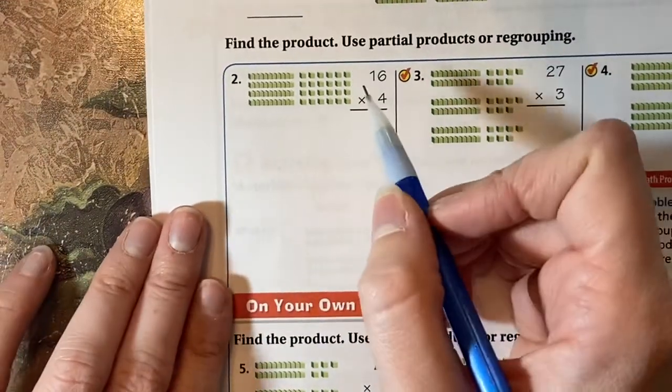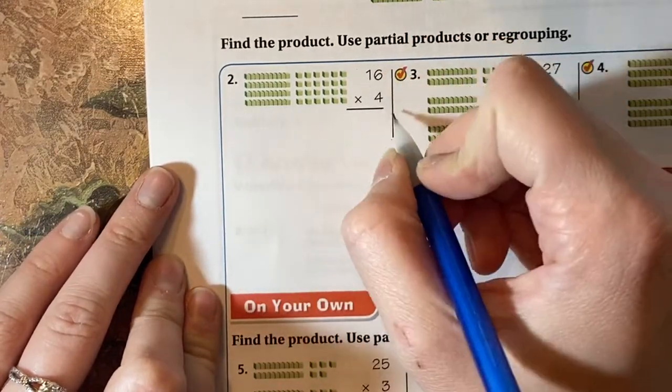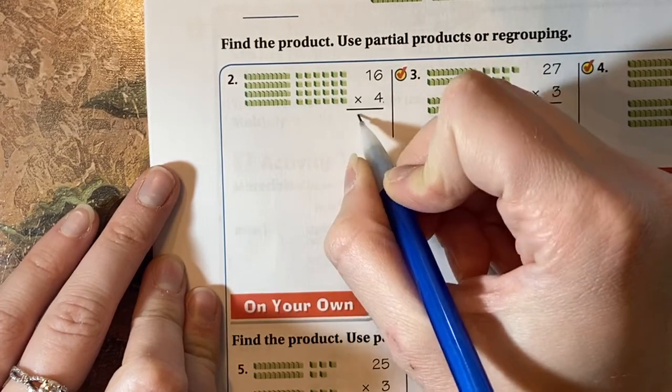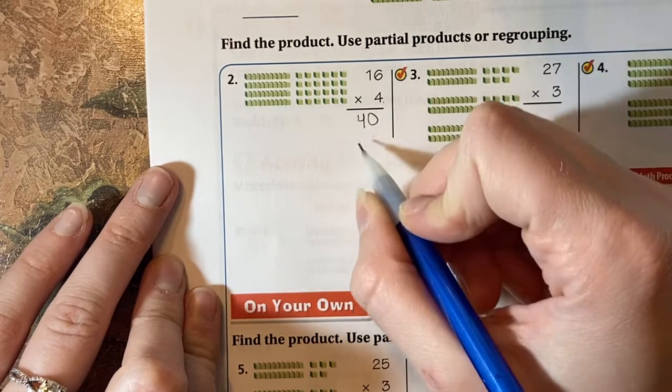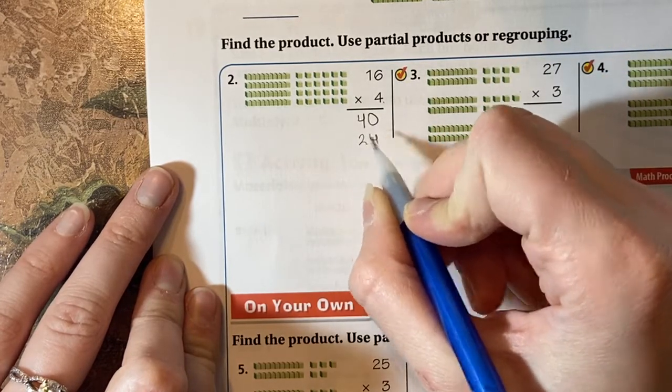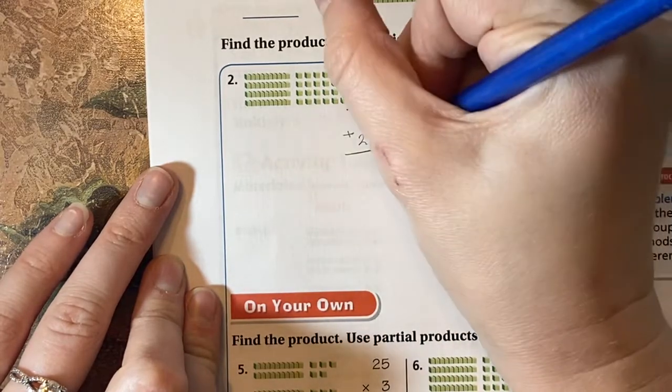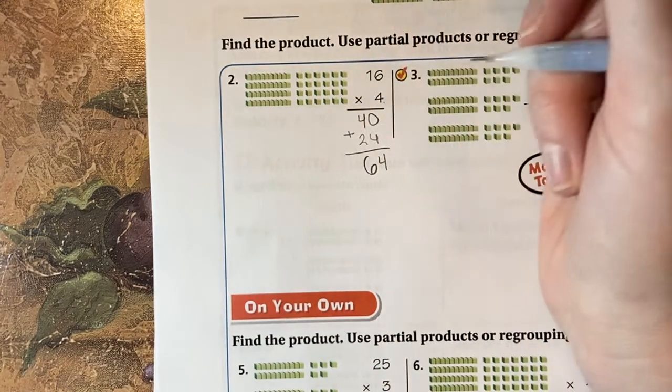So let me zoom in a little bit here. All right. So for number two, we have 16 times four. So I can either start with the tens place. So I have one 10 times four, which is 40. And then I do six times four, which is 24. Add those together. Zero plus four is four, and four plus two is six. So my product here is 64.